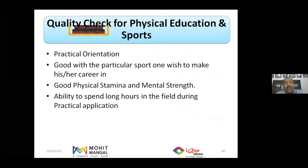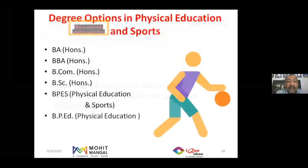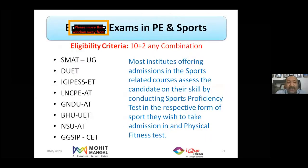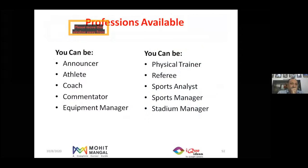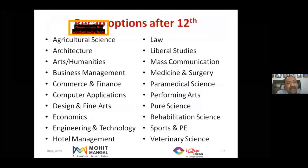Physical Education and Sports suits practically-oriented candidates good at a particular sport, with strong mental strength, physical stamina, and ability to practice extensively. Degrees include BPE, BBA, BCom, or BSc Honours in Sports, and the 4-year Bachelor of Physical Education and Sports (BPES). Eligibility is 10+2 any combination. Most institutes conduct a skill assessment test and physical fitness test. Career options include athlete, coach, commentator, equipment manager, physical trainer, referee, sports analyst, sports manager, and stadium manager.